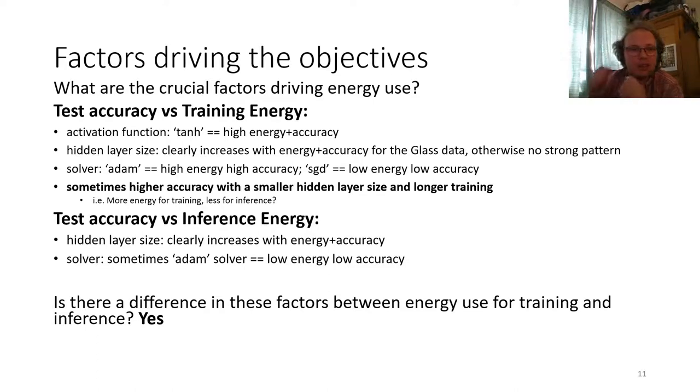Looking at the trade-offs for test accuracy versus inference energy, very clear pattern there, as the hidden layer size increases, more neurons, we have higher energy costs for inference, and the interesting result there is that the solver still sometimes makes a bit of a difference. Sometimes we were finding the Adam solver was at the low energy, low accuracy end of the trade-off for inference.